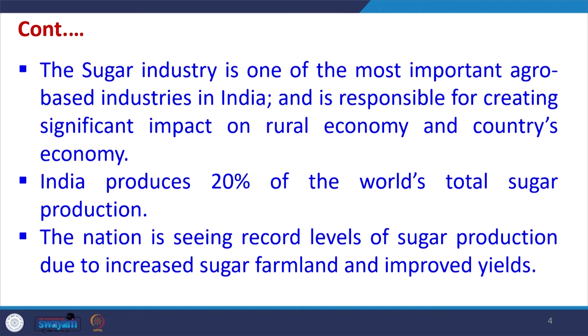India currently produces around 20 percent of the world's total sugar production. The nation is seeing record levels of sugar production due to increased sugarcane farm yields and highly improved crop productivity. In the last decade, yields have increased tremendously, resulting in increased sugarcane production, and consequently sugar production has also increased significantly in the country.